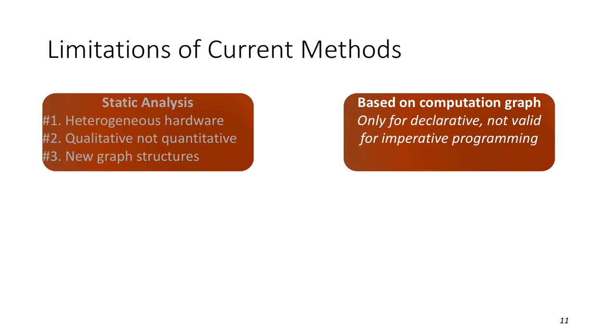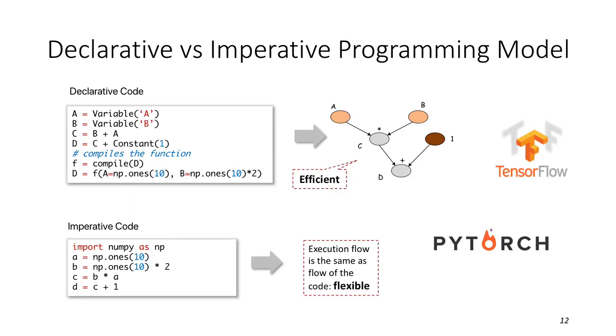In addition, prior works are all based on the computation graph. This only works for declarative programming deep learning frameworks but not imperative. Let's take a brief introduction to the declarative and imperative programming. For declarative, it will first construct a computation graph and doesn't trigger the real computation. And some optimizations can be applied to the computation graph before running. The most popular declarative deep learning framework today is TensorFlow. For the imperative, the execution flow is just the same as the flow of code, which is flexible to write and debug. PyTorch is the most representative. Imperative programming becomes more and more popular especially in the academic community. So TensorFlow introduces Eager execution to embrace the imperative programming and will be its default execution mode from version 2.0.